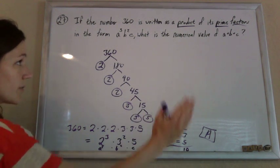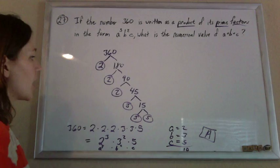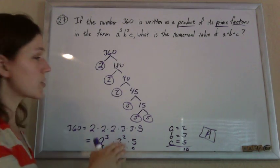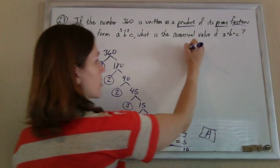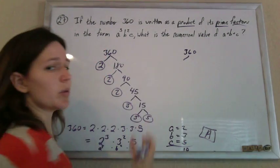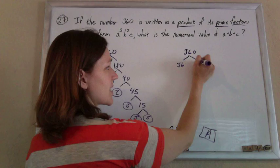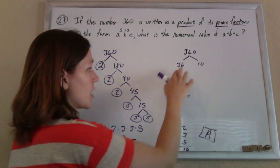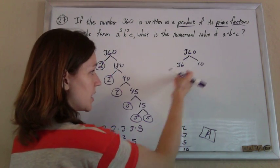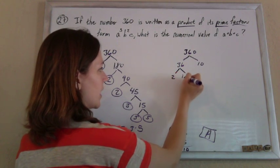So lots of vocab in here. There are other ways to do this factor tree. Like a lot of people see the 360, and they don't see 2 and 180 first. They maybe see a 36 and a 10. That's fine. Just neither one of these are prime, so just keep going with both of them.